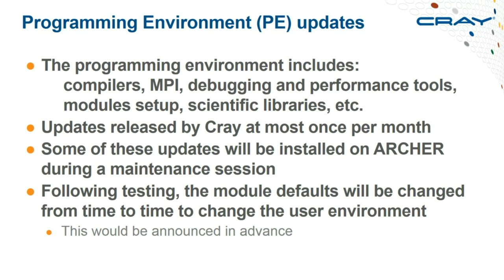Updates to the programming environment are released by Cray sometimes monthly or less frequently, but not all releases are installed on Archer. Generally a few months pass, then an update is installed covering compilers, MPI, and associated libraries. There's then a separate decision — after testing — as to whether those updates become the default.